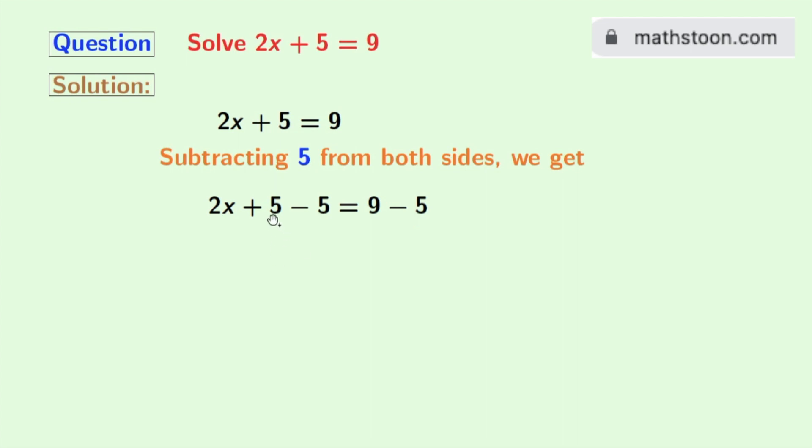As plus 5 and minus 5 is 0, so we are left with 2x in the left hand side. And in the right hand side, we have 9 minus 5 which is 4.